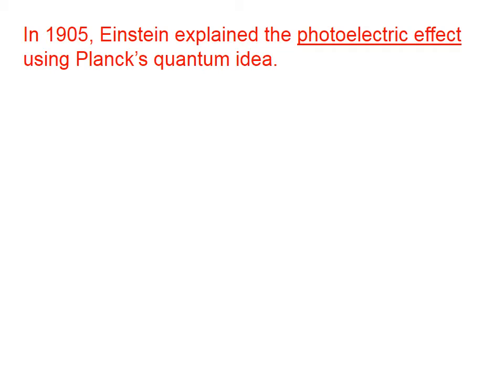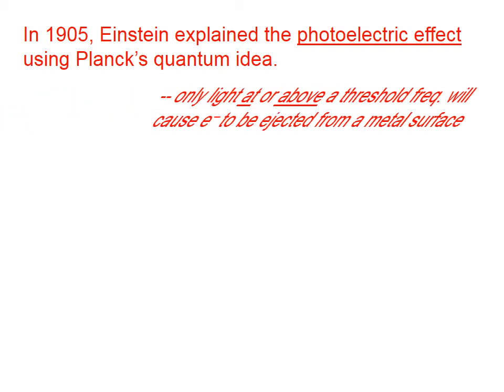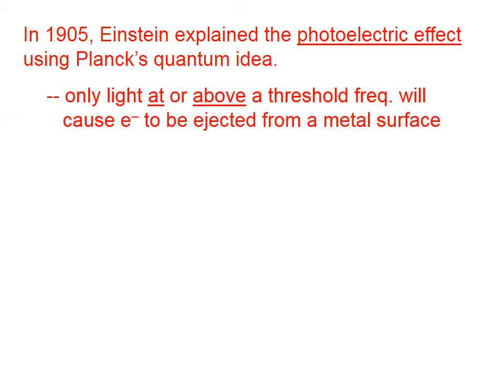In 1905, Einstein explained the photoelectric effect using Planck's quantum idea. It is for this explanation that Einstein earned a Nobel Prize, not for his work with relativity, for which he's more famous, nor for his work in that same year on Brownian motion. So that was actually a banner year for Einstein.